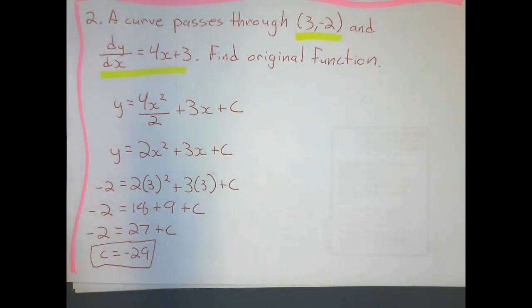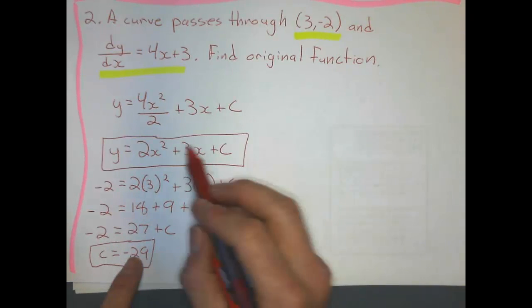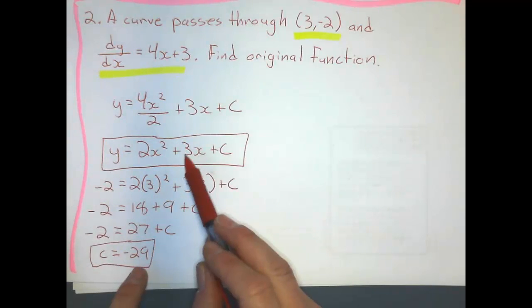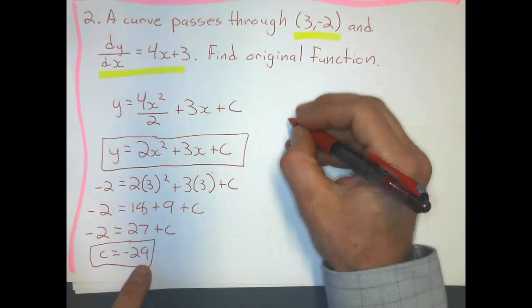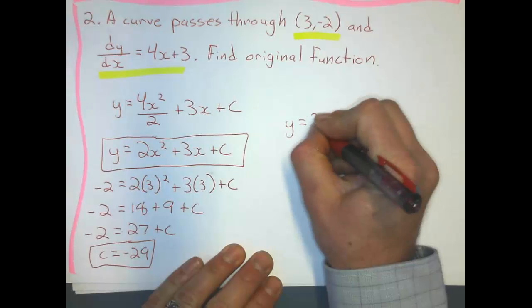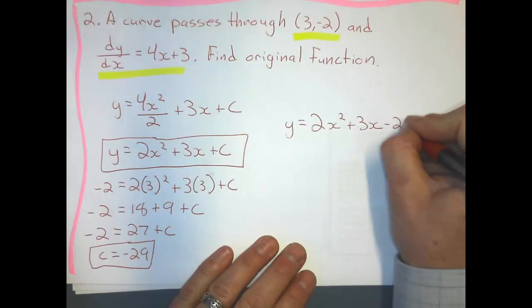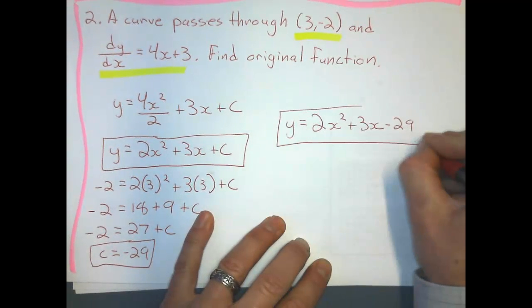Now I can rewrite the equation. And don't forget, when I do rewrite the equation, I don't use the gradient function, I use this one right here. And so I just say y = 2x²+3x-29.